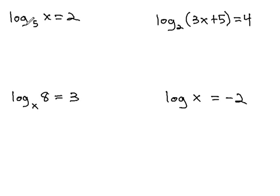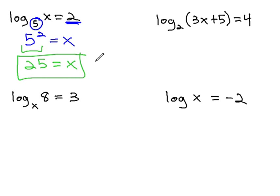For example, in this first example, we have log base 5 of x equals 2. It might not be clear what number to plug in, but if we convert it to an exponential where the base of the log is the base of the exponential and the log equals an exponent, 5 squared equals x. That becomes easy to solve because 5 squared is 25.